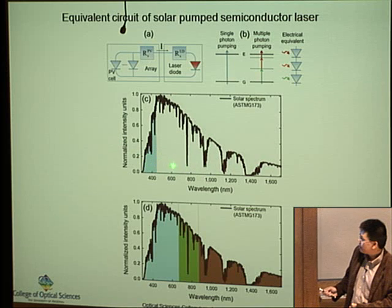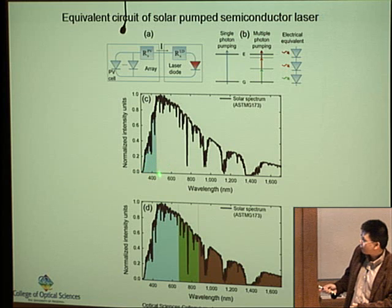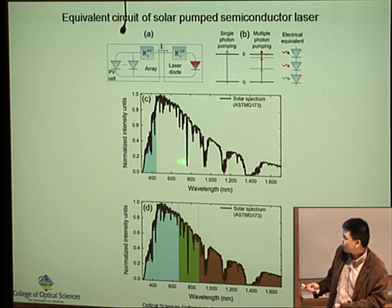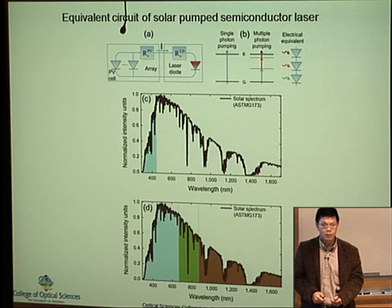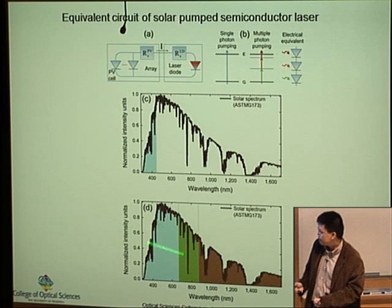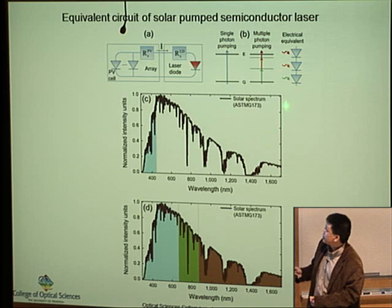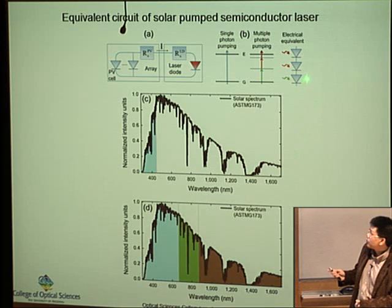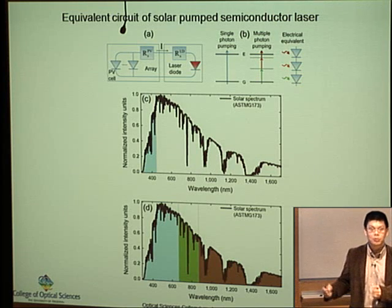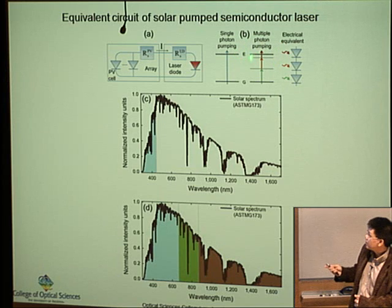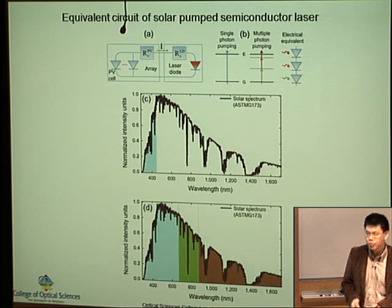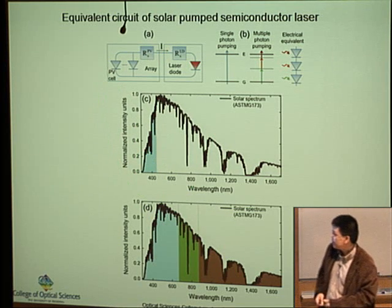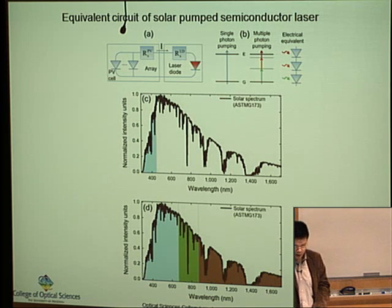By using a triple-junction solar cell, we essentially utilize the entire solar spectrum. Instead of having a single electron with the right energy, you have three electrons that add up in series — you add up the voltage, and once an electron goes through all three diodes, it has enough energy to drive the semiconductor laser and produce the blue photon you need. This way we can achieve much more efficient utilization of the solar spectrum.